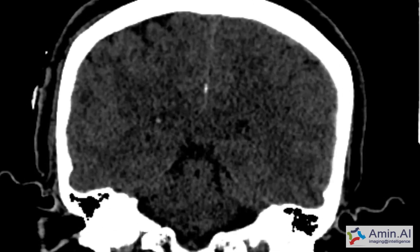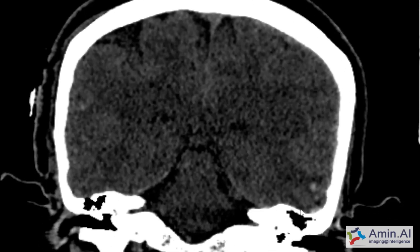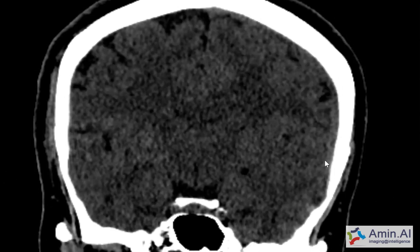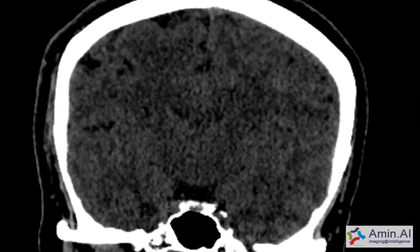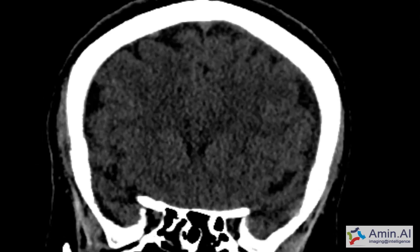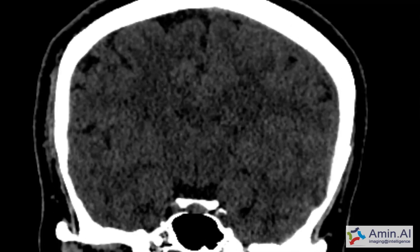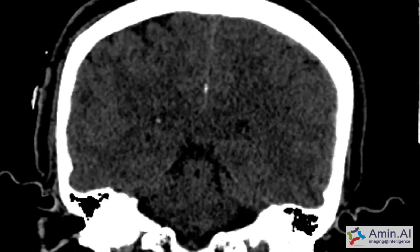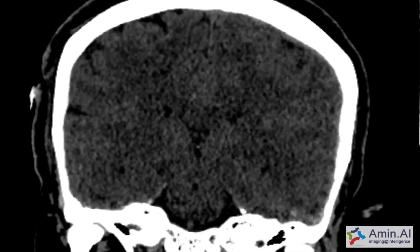This case indicates there is a cortical contusion in this region, and also a mild subdural hemorrhage collection running along the left cerebral hemisphere along the convexity. The reason it is less hyperdense is that the patient may be suffering from anemia. This is an elderly female patient.